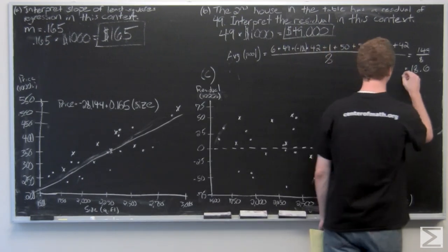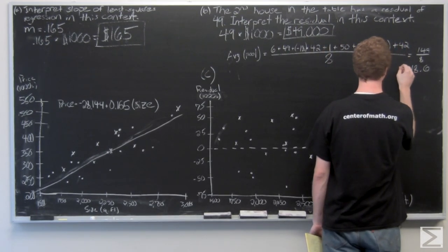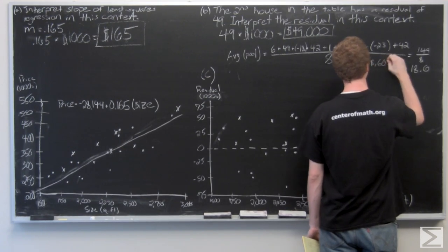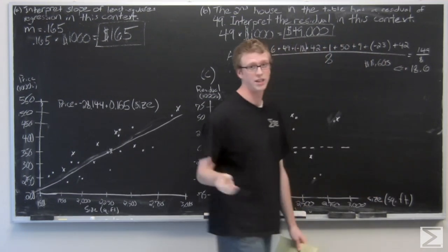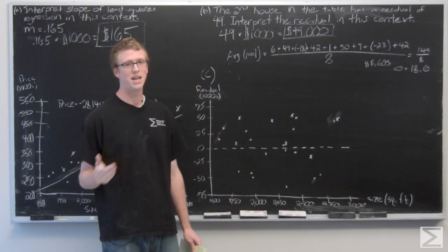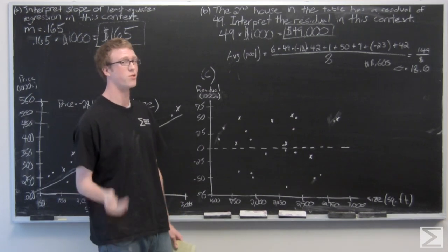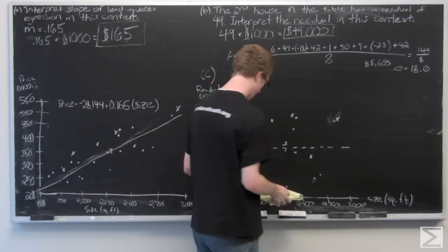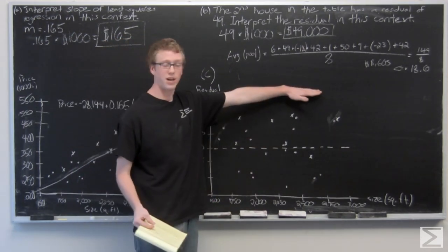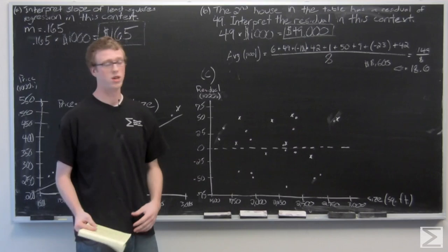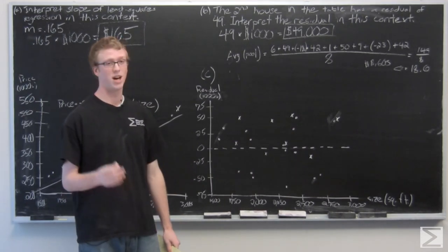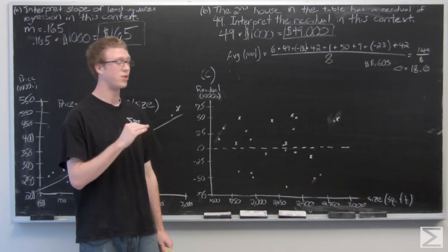We multiply that average pool residual of 18.6 by 1,000 — that's $18,600. So on average, customers who bought a house with a pool paid $18,600 more than the model would have predicted. Now we average the residuals for houses without a pool. There are 17 of them, so I won't write down every value, but know that you need to average out every single value.